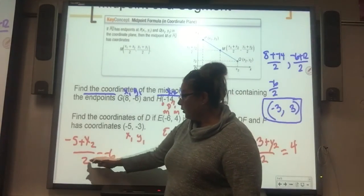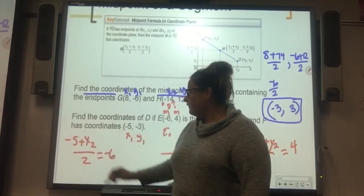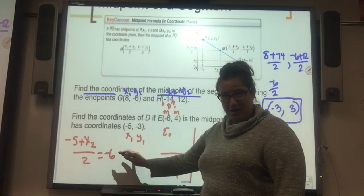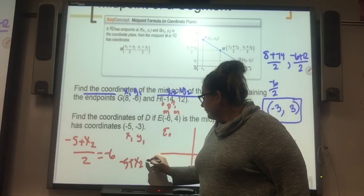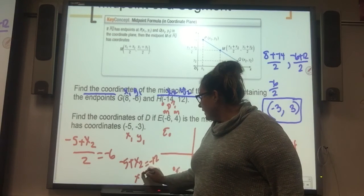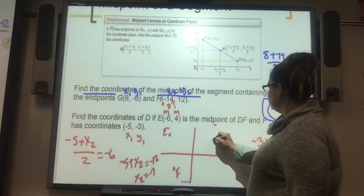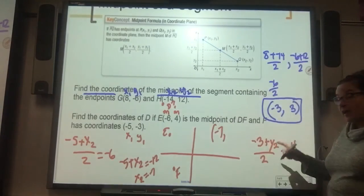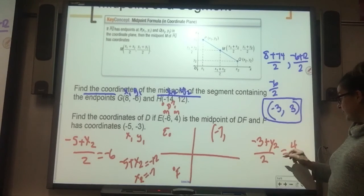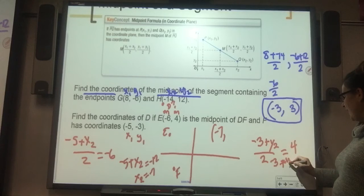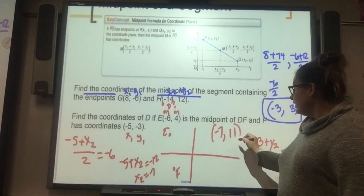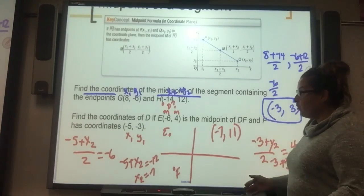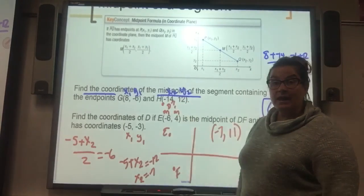So over here, we're going to multiply by 2. So we have that negative 5 plus x sub 2. I'm going to have to write it over here because I'm kind of running out of room. So negative 5 plus x sub 2 equals negative 12. So x sub 2 is negative 7. And then I'm going to evaluate this one. So I'm going to multiply by 2. So negative 3 plus y sub 2 is 8. So y sub 2 is 11 because I add 3 to both sides. So negative 7, 11 is my end point. And that makes sense that this would be over about 7 and up about 11.